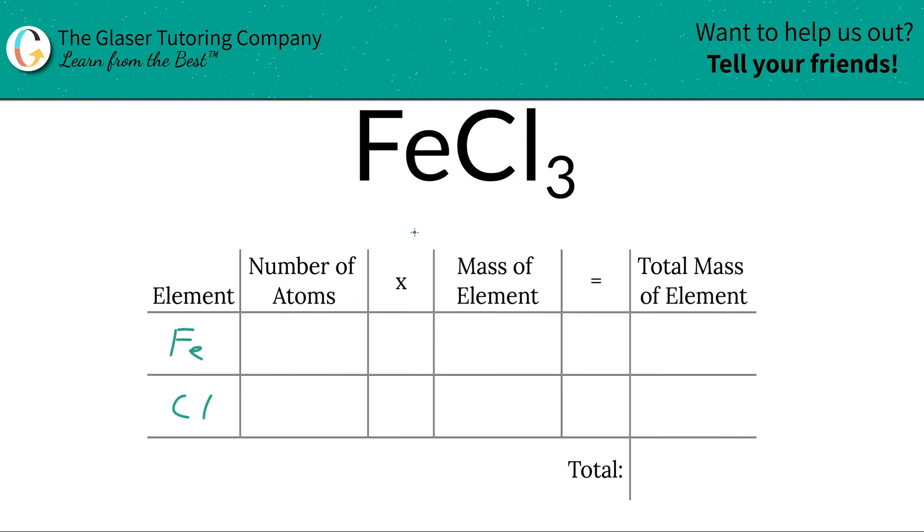Next is to write down the number of atoms. That's where the subscripts come into play. If there's not a subscript there, you must write in a one, and that means there's one iron atom. For chlorine, it's going to be three. There are three chlorine atoms.